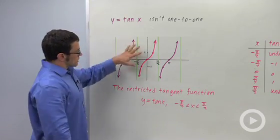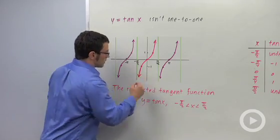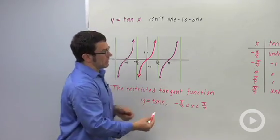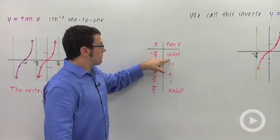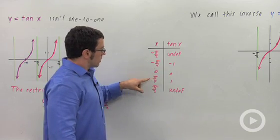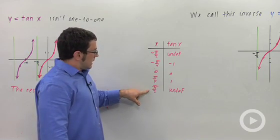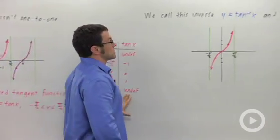And of course, the restricted tangent function has five key points if you include the two asymptotes that bound it. You've got negative pi over 2 where tangent is undefined, negative pi over 4 negative 1, zero zero, pi over 4 one, and again another vertical asymptote at pi over 2, which is because tangent is undefined.